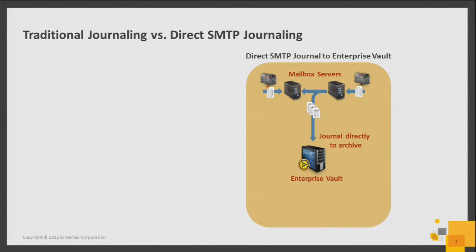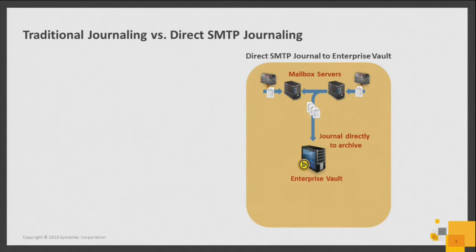Additionally, we've heard some customers say that SMTP archiving is going to help them streamline their migration from Exchange on-premises to Office 365. What this does is it helps preserve investment in the EV on-premises software, even with no Exchange servers on-premises.